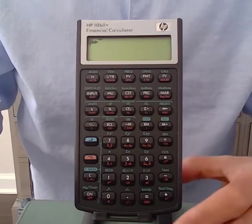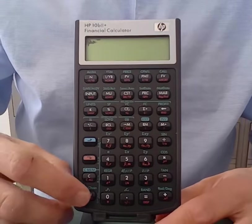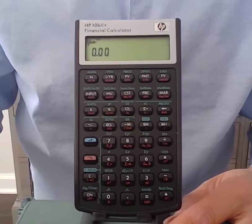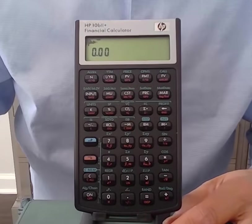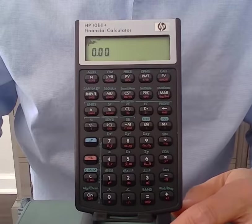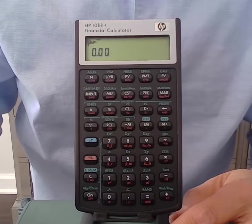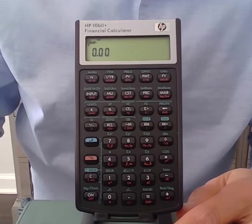When you use the Hewlett-Packard 10B2 Plus Financial Calculator for the first time, you'll see that it displays only two digits past the decimal point. I recommend that you see all the digits possible past the decimal point.